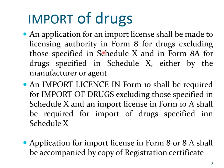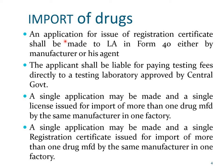Once the application reaches the licensing authority and everything is found okay, an import license will be issued in Form 10, which is required for import of drugs other than Schedule X, and Form 10A for drugs specified in Schedule X. The application for import license in Form 8 or 8A shall be accompanied by a copy of the registration certificate. An application for issue of registration certificate shall be made to the licensing authority in Form 40, either directly by the manufacturer, the importer, or his agent.